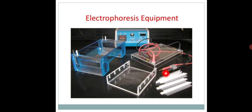One electrode is shown in red color and the second in black color. The red wire is known as the anode, which carries a positive charge. The black wire is the cathode, which carries a negative charge.